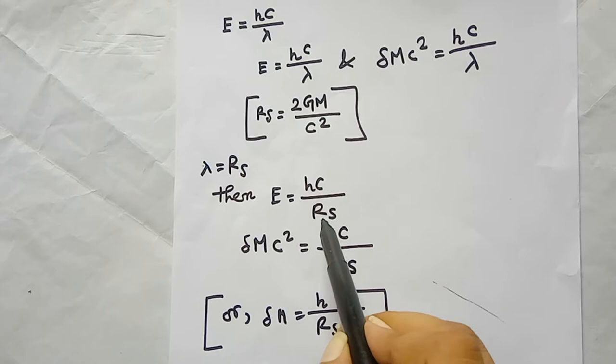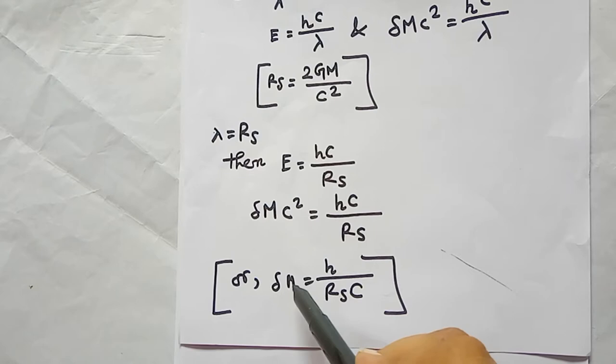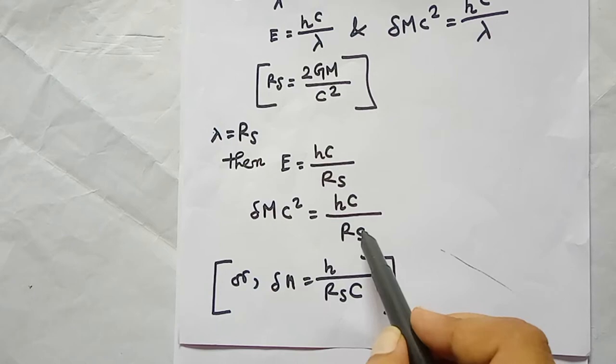Now setting lambda equal to rs (the Schwarzschild radius), we get E equals hc divided by rs. This gives us delta mc squared equals hc divided by rs. Rearranging, dividing both sides by c squared, we get delta m equals h divided by (rs times c).